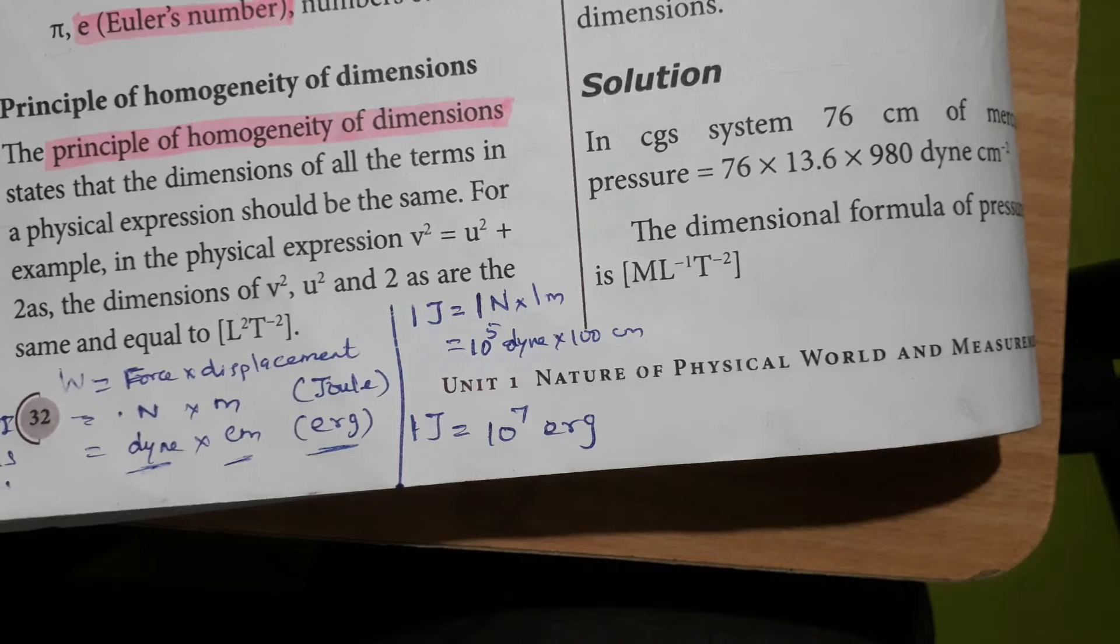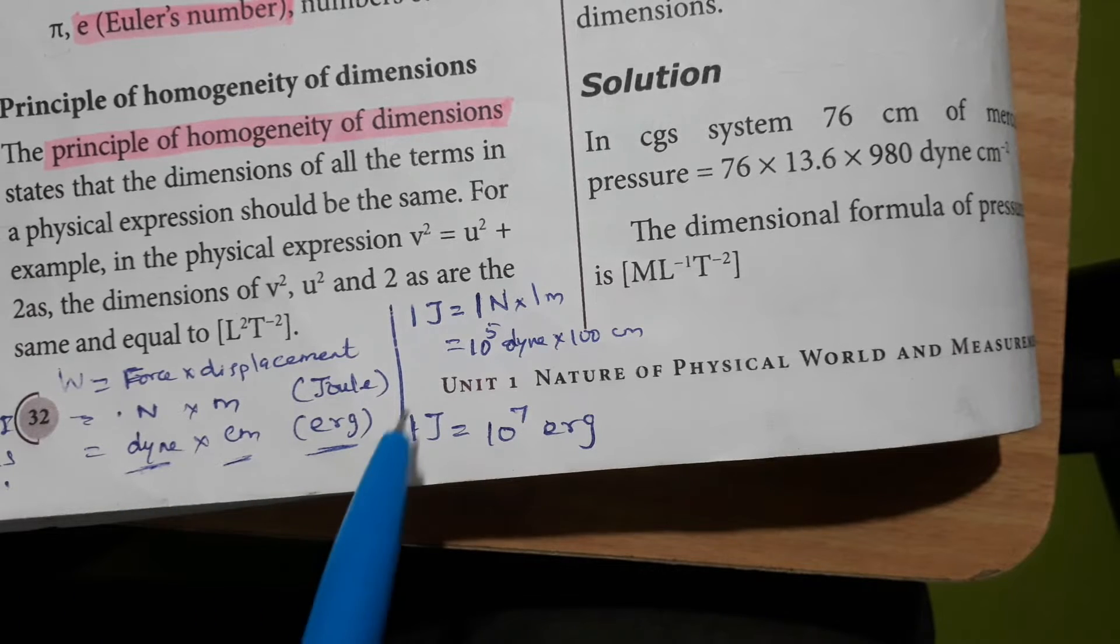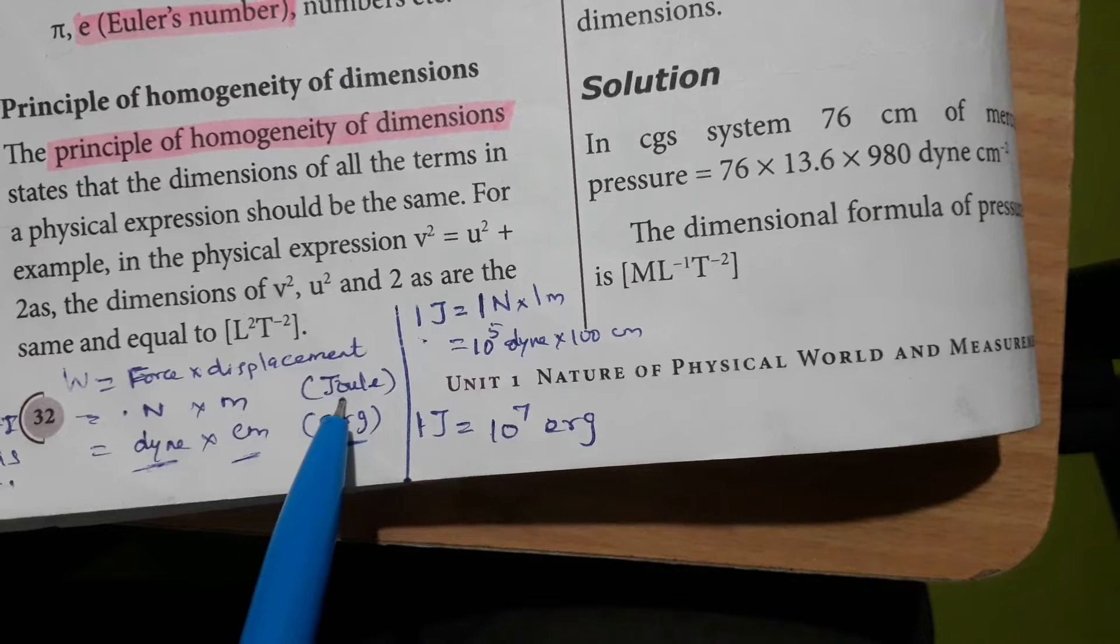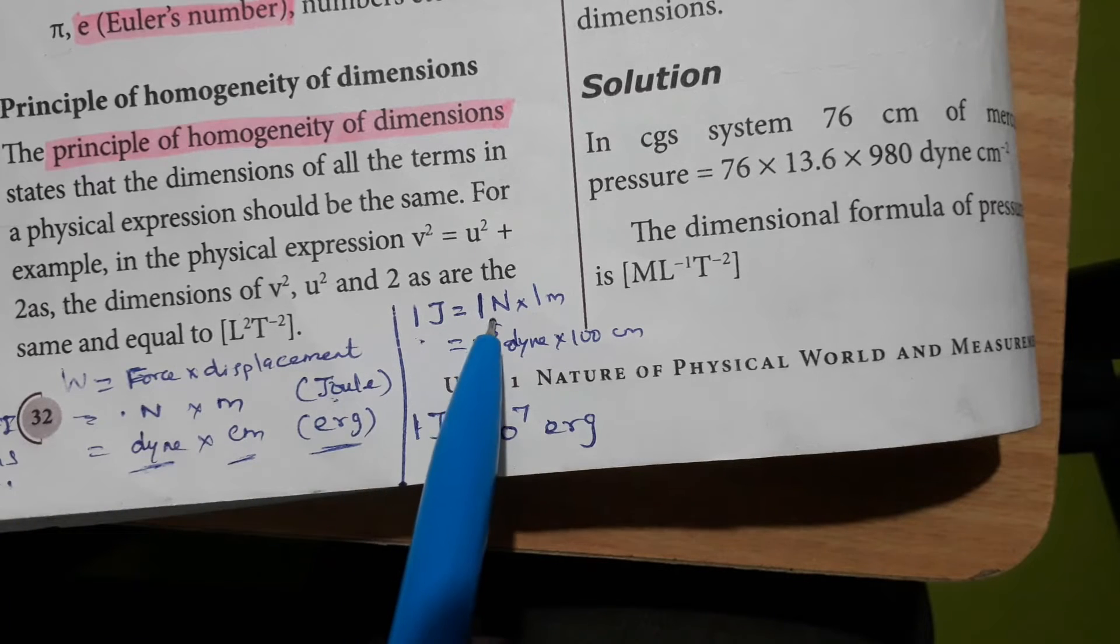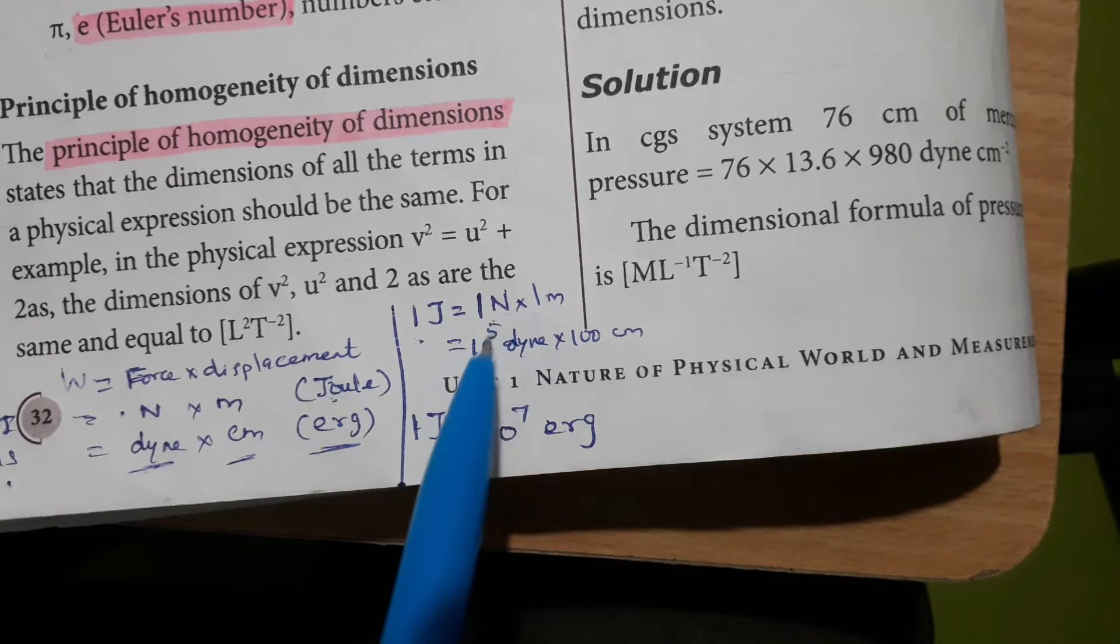The question will be asked: what is the relationship between Joule and erg? So 1 Joule, work done in SI units, is equal to 1 Newton into 1 meter.